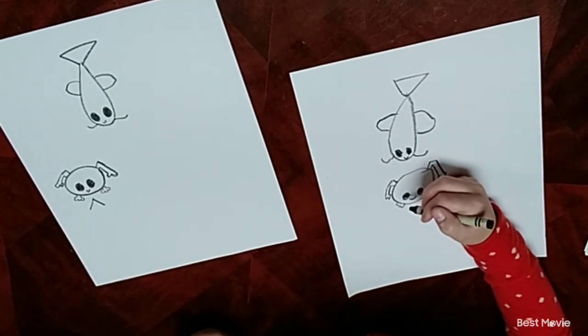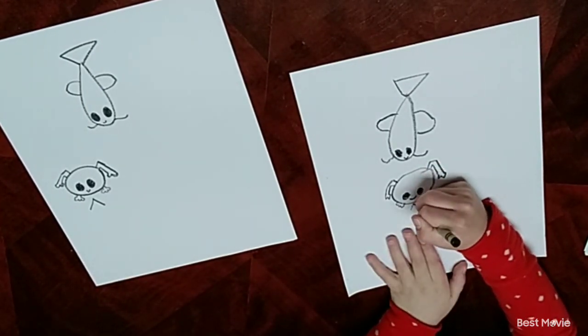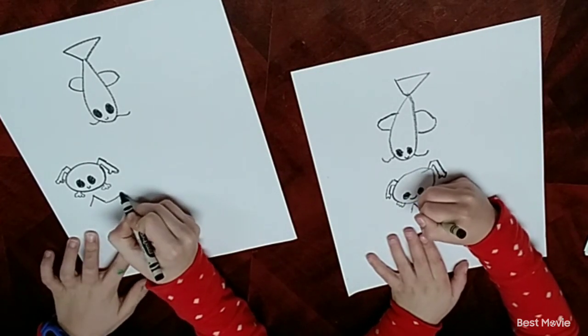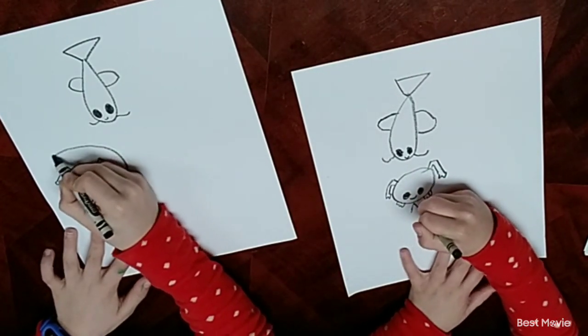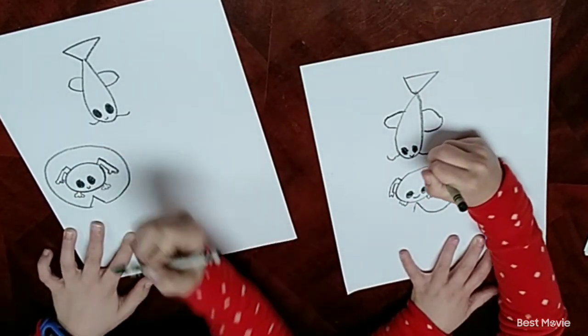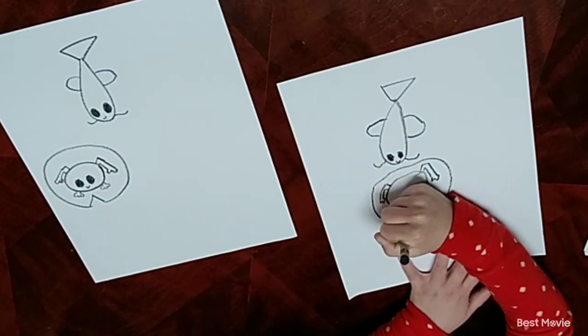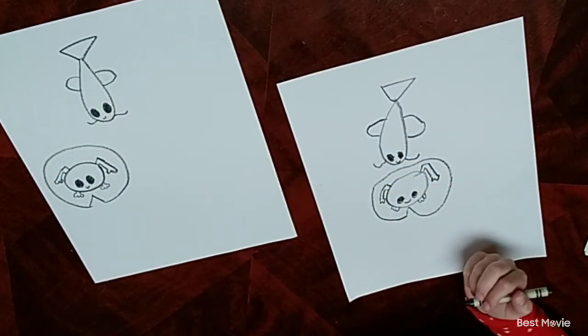So draw a triangle kind of right under him. Now curve it around and connect. There you go. So draw your own little lily pad.